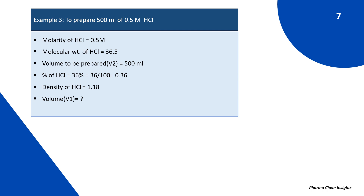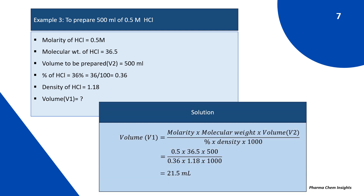Applying the formula: V1 = molarity × molecular weight × V2 ÷ (percentage × density × 1000). That is 0.5 × 36.5 × 500 ÷ (0.36 × 1.18 × 1000). By calculating we get 21.5 ml. So 21.5 ml of conc. HCl is to be diluted to 500 ml with water to get 0.5 molar HCl solution.